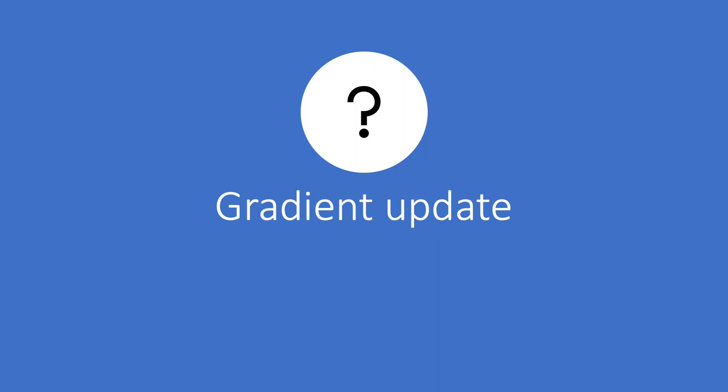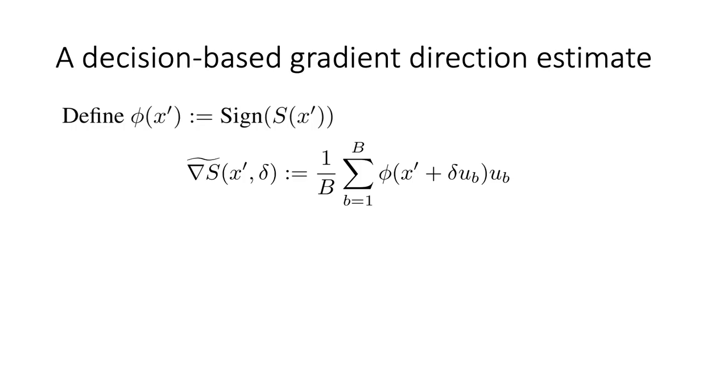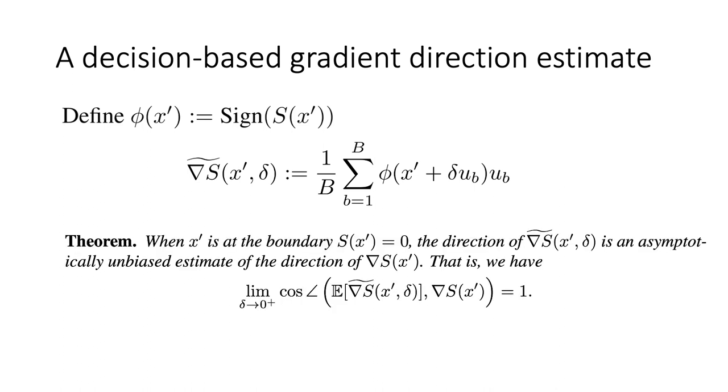However, currently the gradient update requires access to the gradient of the model with respect to the input. To solve this problem, we introduce a gradient direction estimate. Let's define phi as the sign of S, which depends on labels alone. First, we sample a batch of random vectors u_i. Then, we define the estimate as the weighted average of random vectors, where the weight is given by the sign of S for the image perturbed along the corresponding random direction. Delta is the size of perturbation. We show that the estimate is unbiased as delta tends to zero at the boundary.